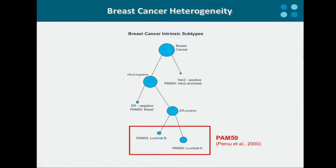Luminal tumors have been further stratified using mRNA signature into luminal A and luminal B, with luminal A being less aggressive, generally associated with a better prognosis, and overall the most frequently occurring breast cancer subtype in the population.